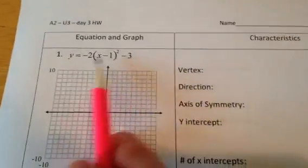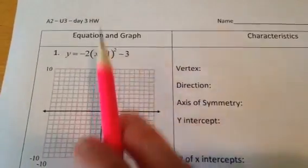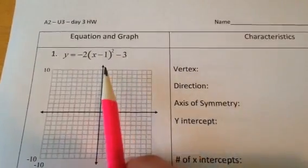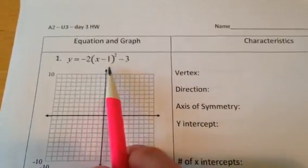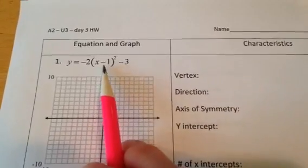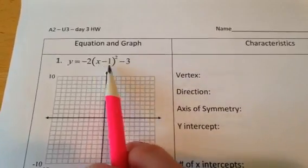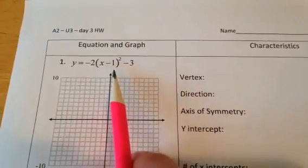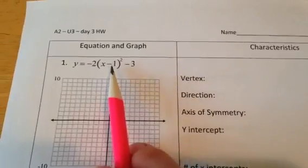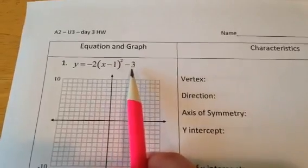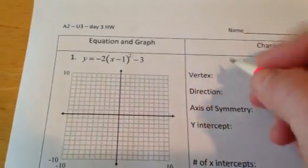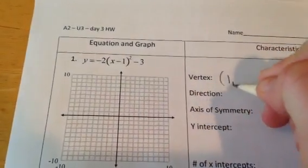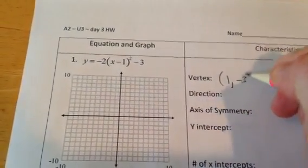All of these are in lovely vertex form where we can pluck the vertex right out. Because the transformations take the opposite when it's grouped in like this, so it'll be a 1 and then a negative 3. So this one will be 1, negative 3.